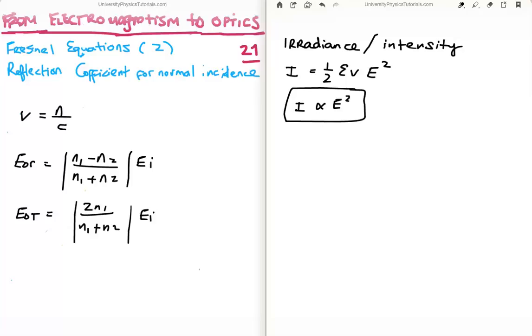Our eyes or detectors can measure something in proportion to the square of the electric field, whereas we cannot measure the amplitude itself. While we do have the reflection and transmission coefficients, we cannot measure them as they are. All we can measure is the irradiance. So we need to square these in order to see what we are actually able to measure.